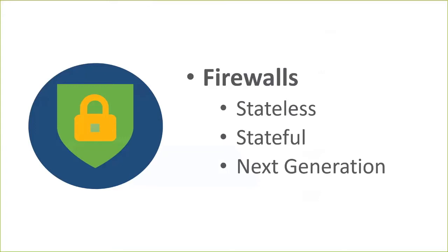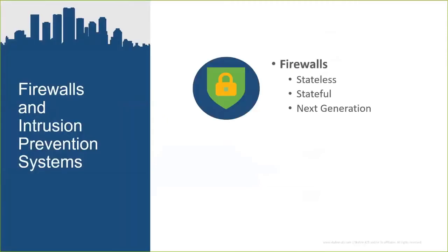Next-generation firewalls have more granular examination features on a connection-by-connection basis. For example, a standard Cisco ASA would not natively have the ability to look at which URL you're actually going to on the internet, but a next-generation firewall can not only know that, but also know what application protocols you're using to reach that resource, and manage that from an application visibility, malware inspection, and file inspection perspective.